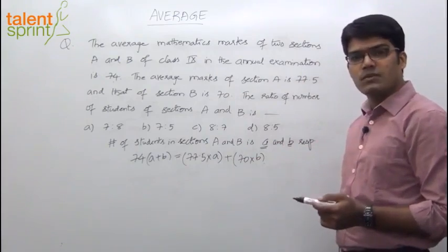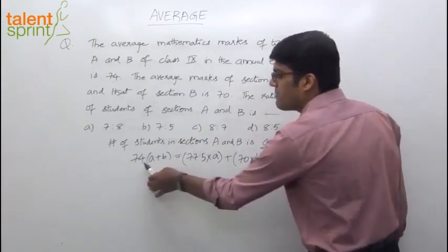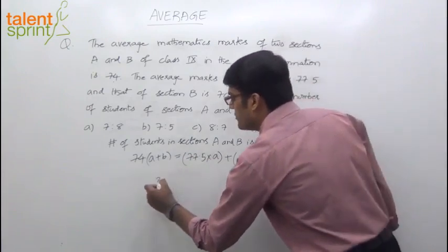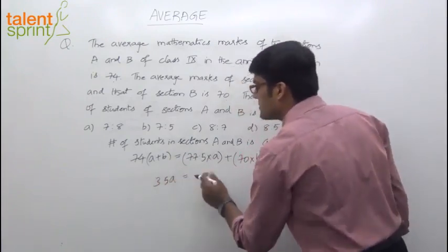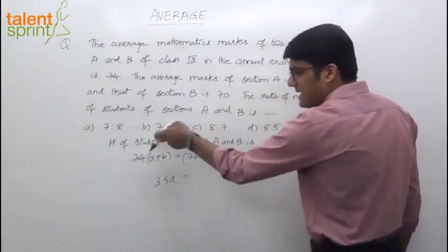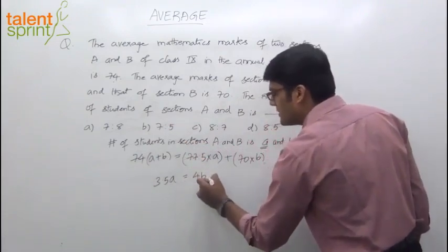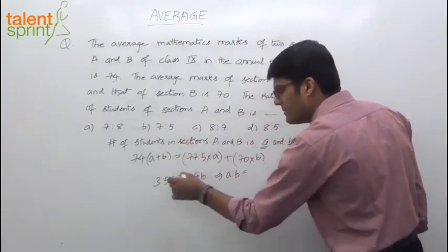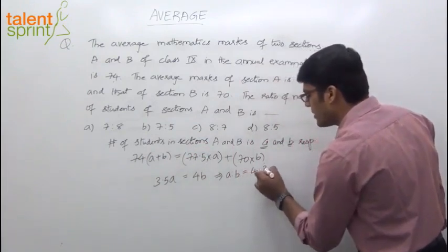Simplify this, we get the ratio A is to B. What happens? 77.5A minus 74A, so that will give you 3.5A equals to 74B minus 70B. That gives you 4B. So we can say A is to B, A by B is equal to 4 is to 3.5.